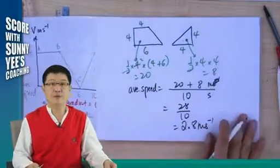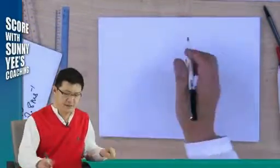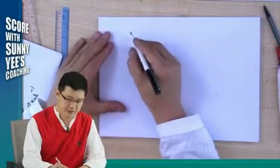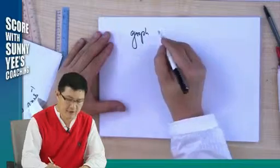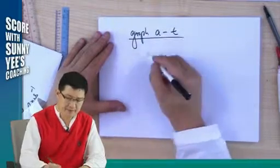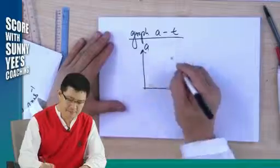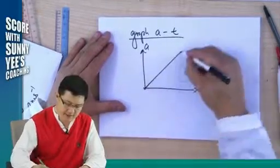So that will be the graph. And finally, the graph on acceleration. Graph on acceleration versus time. Now, in acceleration versus time, acceleration versus time say like this.